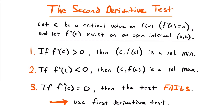Here's the formal definition of the second derivative test. It can look a little daunting at first, but it's actually very simple. If we let c be a critical value on a function, meaning that the first derivative at that value of c is equal to zero, and the second derivative of that point c exists on an open interval, then we follow these guidelines: if the second derivative at c is greater than zero, the function is concave up, and that point is a relative minimum. If the second derivative at c is less than zero, the function is concave down, and that point is a relative maximum. And if the second derivative at c is equal to zero, the test fails and we have to revert back to using the first derivative test.